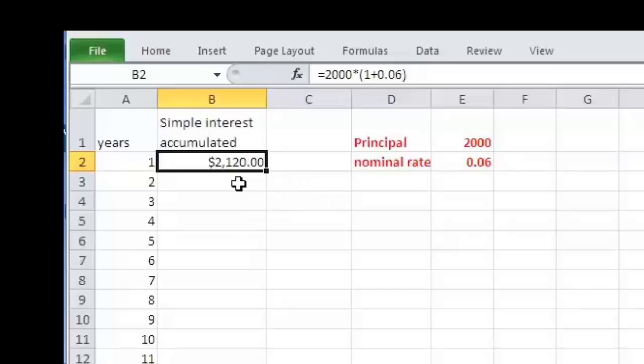At the end of the second year, the formula will be $2,000 times 1 plus .06 times 2. We click the check mark, the formula is computed, and the value is placed in the cell where it belongs.